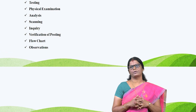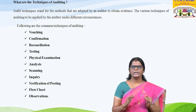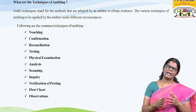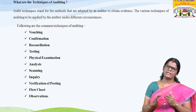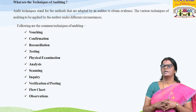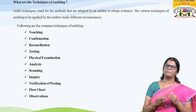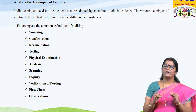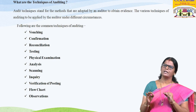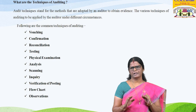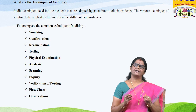Techniques of auditing: evidence is very important for an auditor to form an opinion regarding financial statements. If an auditor fails to collect proper evidence, it will reduce the reliability of the audit report. The method of collecting evidence is called an audit technique. The various techniques applied by the auditor under different circumstances include the following. First, vouching: when the auditor verifies accounting transactions with documentary evidence, it is called vouching. Through vouching, the auditor verifies the authority and authenticity of records.